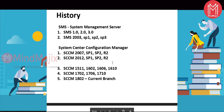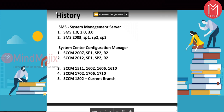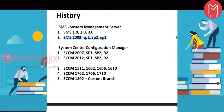If you talk about the historical details of SCCM, it started in 1994. The name of this tool was SMS — System Management Server. It was released as SMS 1.0, then SMS 2.0 and 3.0. Later, Microsoft released SMS 2003 with multiple versions. In the year 2007, Microsoft changed the naming convention from SMS to SCCM 2007.